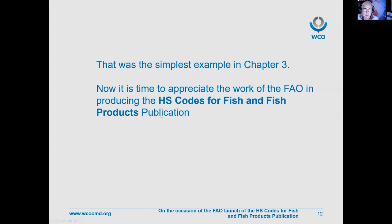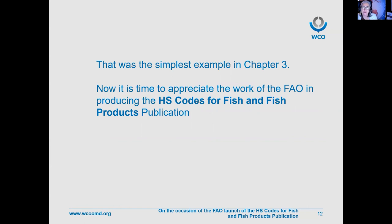We went through the simplest example in Chapter Three and talked about the complexity of looking at the different levels in order, grouping them correctly, and taking into account the notes and any GIRs that might apply. This is a good time to appreciate the work of the FAO in producing HS Codes for Fish and Fish Products. This publication will assist greatly in the everyday work of traders — correct classification not only helps with statistics, monitoring, and global policy, but also protects traders from penalties that can occur from incorrect classification. Congratulations to the FAO.